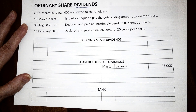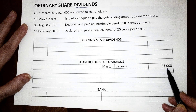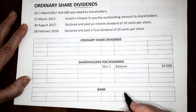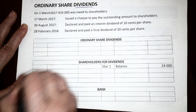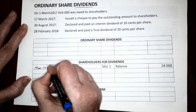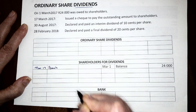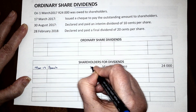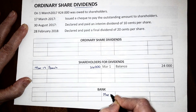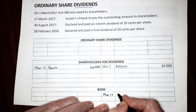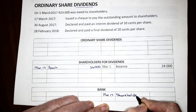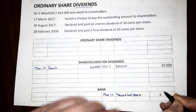In this case, on the 1st of March, 24,000 Rand was owed to shareholders, which means we have to pay that at the beginning of the next financial year. So on March the 17th, we will issue a check to the shareholders to pay for the dividends declared at the end of the previous financial year. We will credit the bank to indicate that the money was taken out of the bank and paid out to the shareholders — 24,000 Rand.